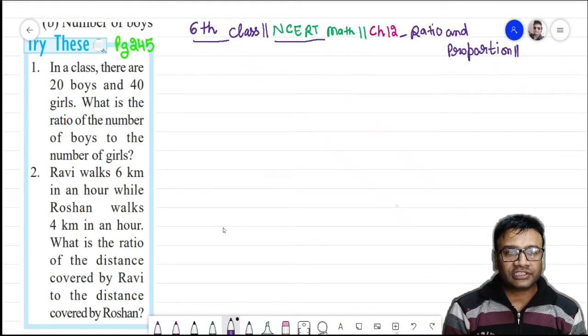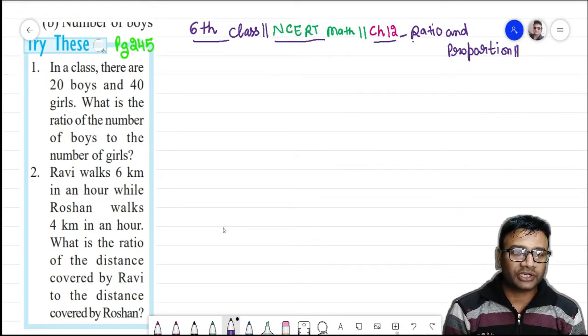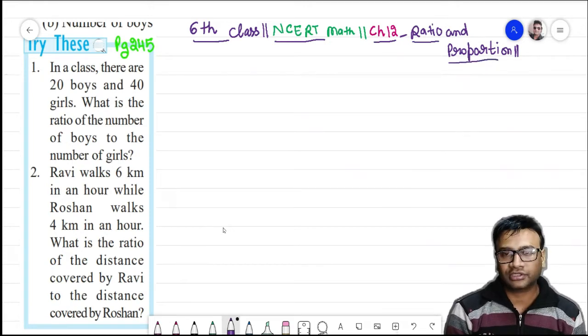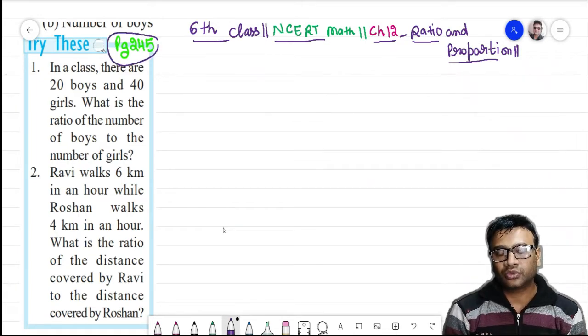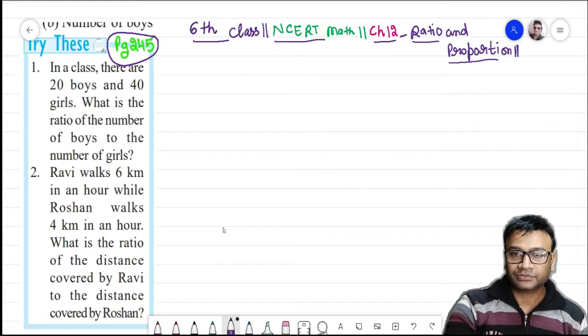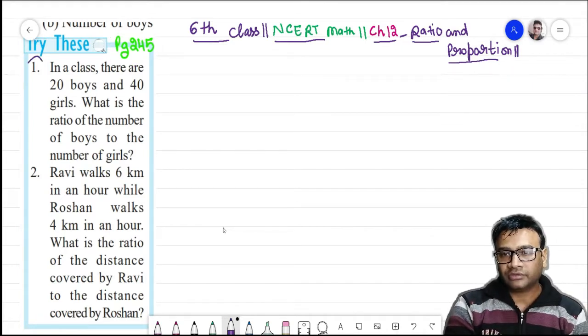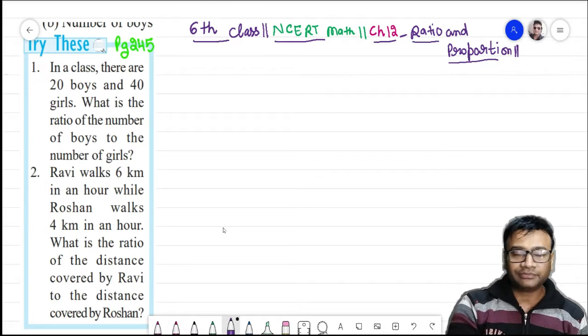NCERT math chapter number 12, ratio and proportion. The try these which we are going to do is of page number 245. Question number 1 we will do at this time.